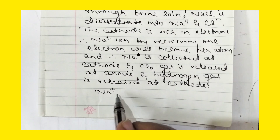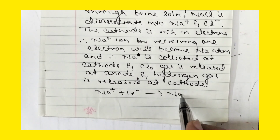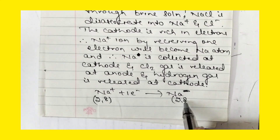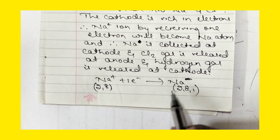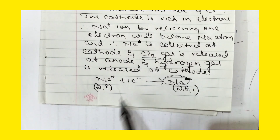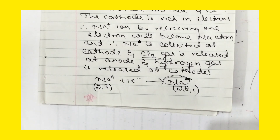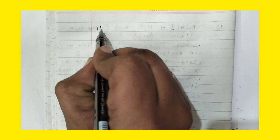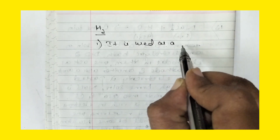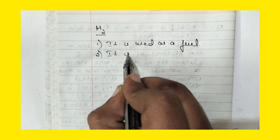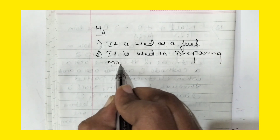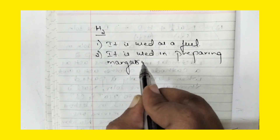The reaction at cathode: Na⁺ + e⁻ → Na. Sodium is collected at cathode. The two gases obtained are hydrogen and chlorine. Uses of hydrogen: it is used as a fuel, and it is used in preparing margarine, that is artificial ghee.